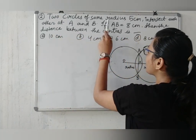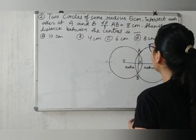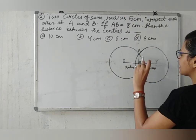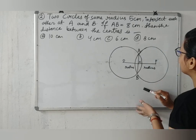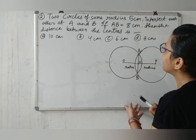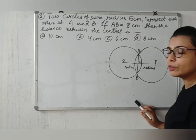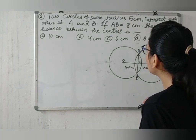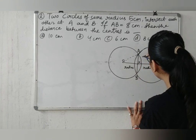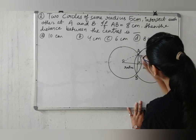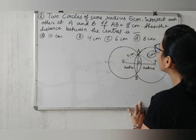Now come to the next question. Question 2: Two circles of same radius 5 cm intersect each other at A and B. Here are two circles given in figure intersecting at points A and B. If AB is equal to 8 cm, then we need to find out the distance OO'. Radius of each circle is 5 cm. First circle radius AO is 5 cm and second circle radius AP is 5 cm.